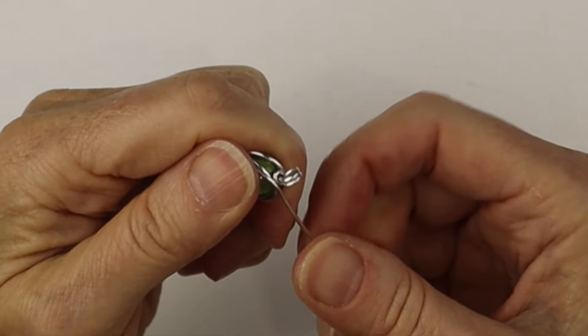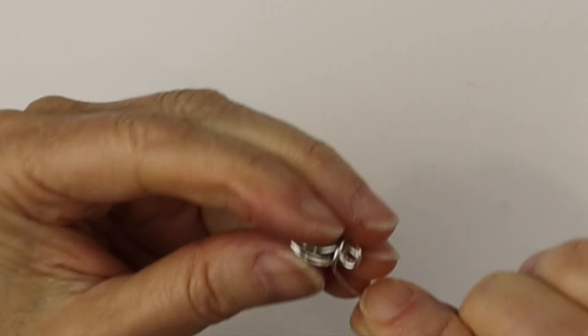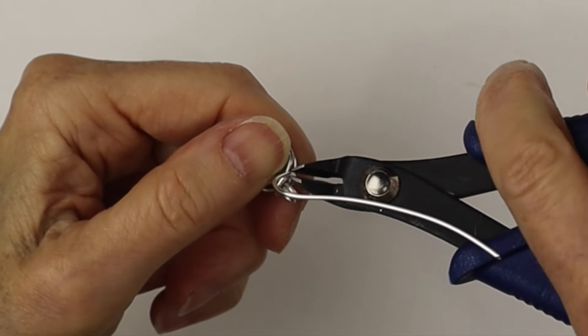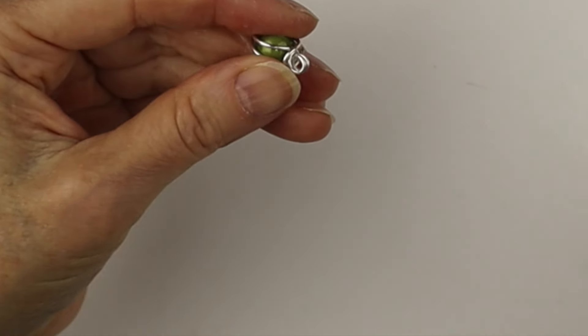Then when you're happy with it, hold it firmly and bring the wire around to the front. So from there we're going to clip that end flush. I cut my wire a little too long. It really depends on the size of your bead.